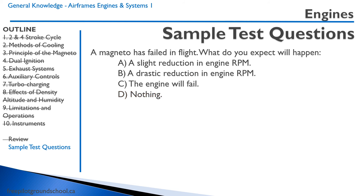A magneto has failed in flight — what do you expect will happen? A: a slight reduction in engine RPM. B: a drastic reduction. C: the engine will fail. D: nothing. Recall that each magneto provides power to one spark plug per cylinder. If one magneto fails, one spark plug per cylinder fails, but the other spark plug takes over. The engine won't produce quite as much power but will keep running. Correct answer: A, a slight reduction in engine RPM. It's not a drastic reduction because one magneto doesn't power all spark plugs for half the cylinders — the engine won't fail because of dual ignition.